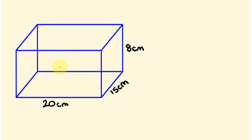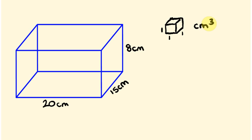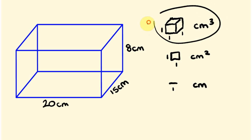The way that we measure volume is in cubic units. So for example, if something is in centimeters we would measure the volume in cubic centimeters — that's a cube that's one centimeter by one centimeter by one centimeter, written as centimeters cubed. This is different from area, which is two-dimensional and measured in centimeters squared, or plain distance measured in centimeters.